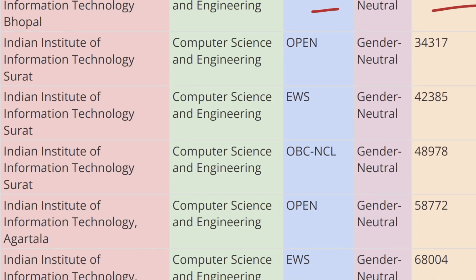Next in the list we have IIIT Surat. For Open category for Computer Science the cutoff rank is 34,317, for EWS category the cutoff rank is 42,385, and for OBC-CL the cutoff rank is 48,978 for Computer Science and Engineering.